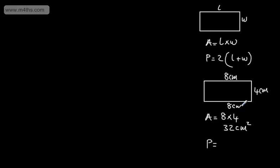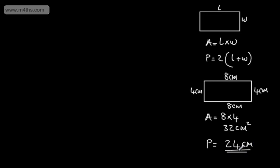For the perimeter, we add all the side lengths together: 8 plus 4 is 12, plus 8 is 20, plus 4 is 24. So the perimeter is 24 centimetres. Perimeter is a length so we use centimetres, while area uses centimetres squared.